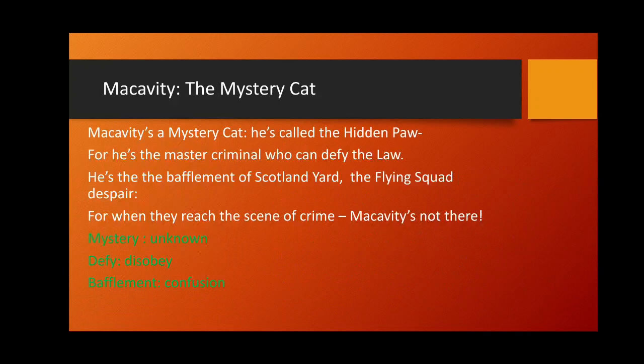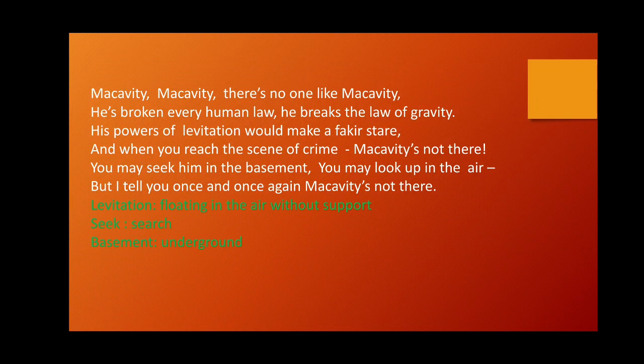Let's start the poem — 'Macavity the Mystery Cat.' Macavity is a mystery cat, he is called the Hidden Paw, for he is the master criminal who can defy the law. He is the bafflement of Scotland Yard, the Flying Squad's despair, for when they reach the scene of crime, Macavity's not there. Macavity, Macavity, there's no one like Macavity — he has broken every human law, he breaks the law of gravity. His powers of levitation would make a fakir stare, and when you reach the scene of crime, Macavity's not there.